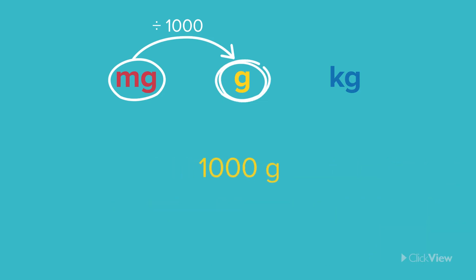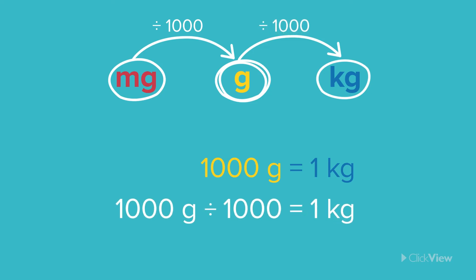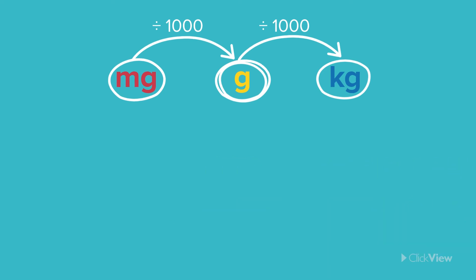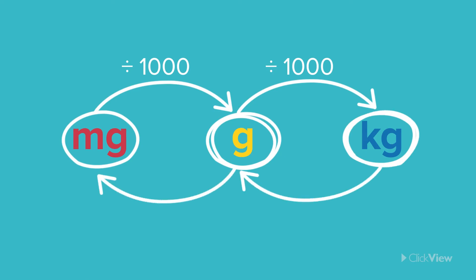If you want to convert grams to kilograms, all you need to do is divide grams by one thousand. So 5,000 grams equals five kilograms. Now in reverse, moving from kilograms down into smaller units simply requires multiplication by one thousand instead of division.